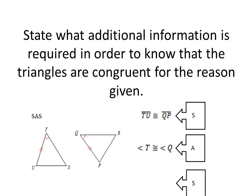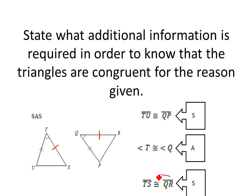Now we just need a side, but the angle is an included angle so it must be in between the two sides. I'm going to mark side TS and side QR — now our angle is in the middle of the two sides, making it the included angle, so we have side-angle-side. TS being congruent to QR is the additional information we would need.